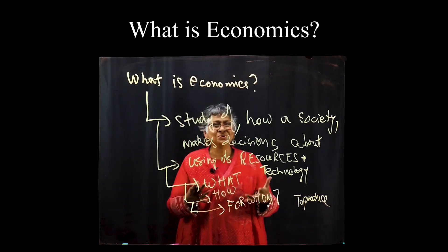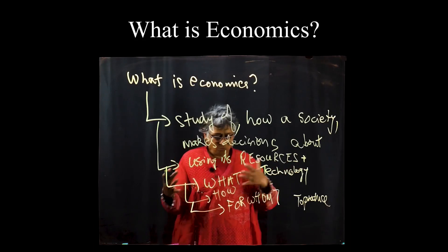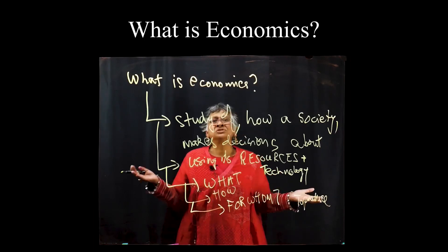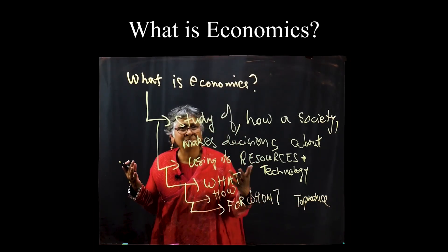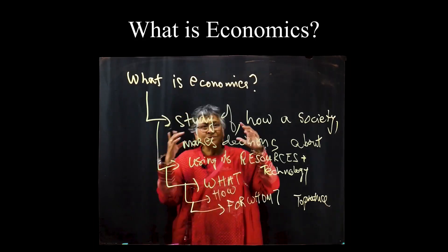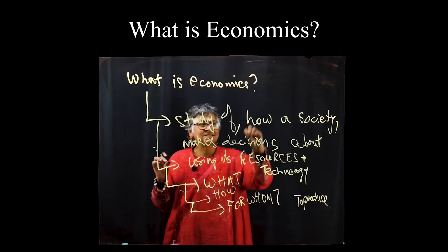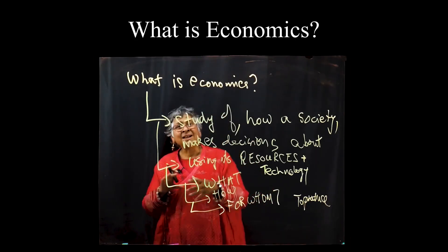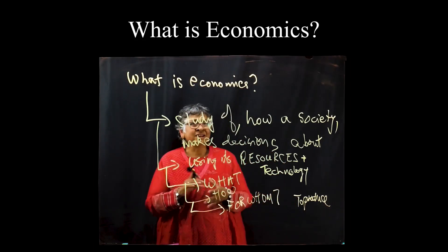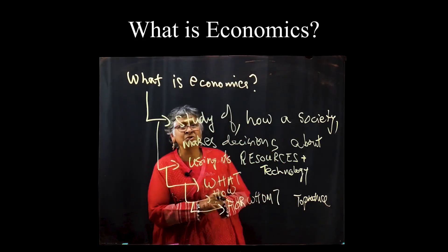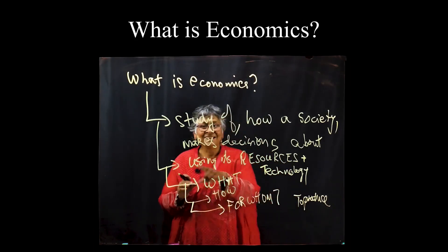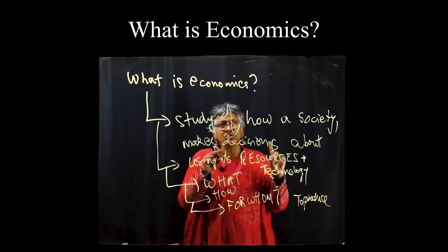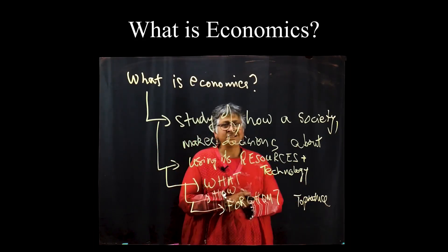Who am I producing for? Who is going to buy it? How are they going to buy it? What happens if incomes are not aligned with being able to afford things? Then for whom am I producing? So just keep in mind that economics is the study of what, how, and for whom to produce. While it's very easy to go rapidly to something like markets or businesses, that's actually not what economics is. Markets and businesses are one way, but not the only way to make these decisions.